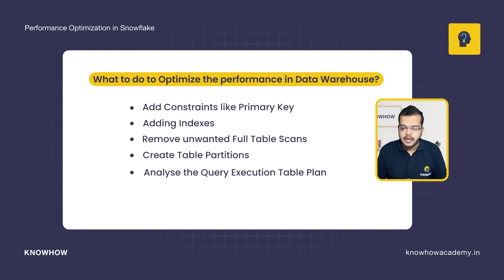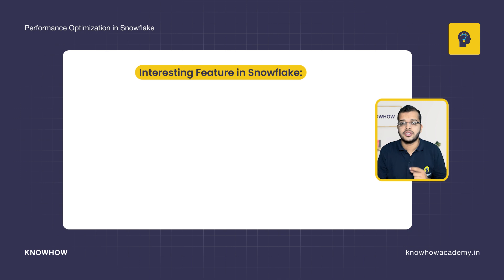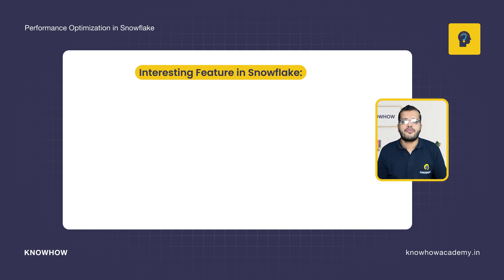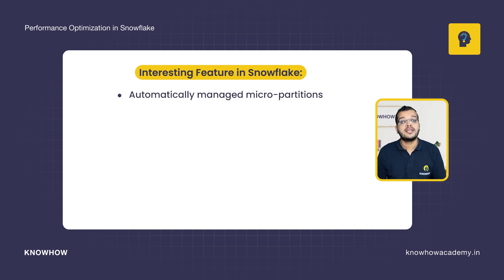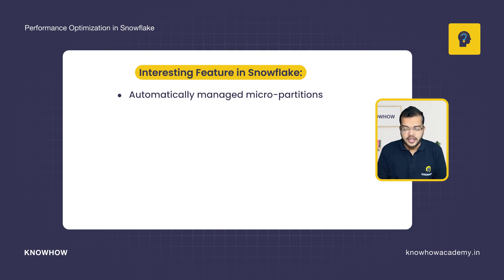Now let us see what is an interesting feature in Snowflake. We have to add constraints, use indexes, check the query execution plan, and have table partitions. But do you really think a person has to focus on all these things apart from their regular project work? For that, Snowflake gives us an interesting feature — we don't need to manually do all these. All the things we discussed about optimizing performance are automatically managed by micro-partitions, which is an inbuilt feature given by Snowflake.